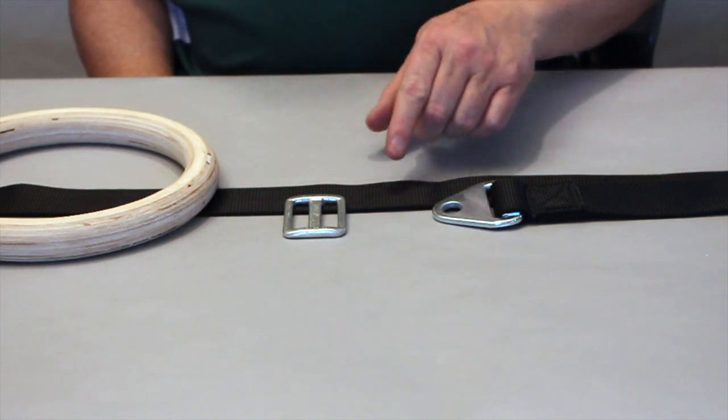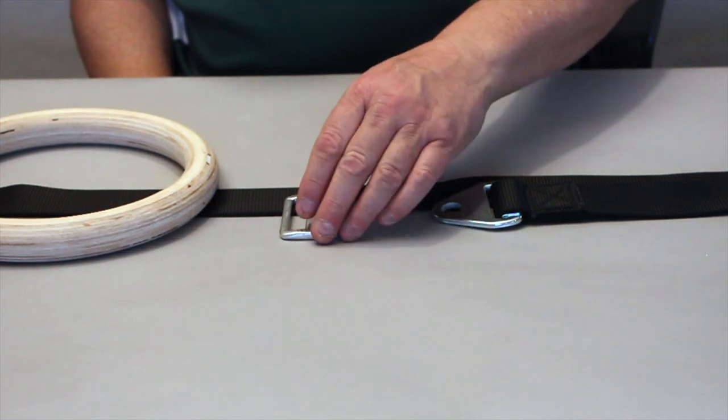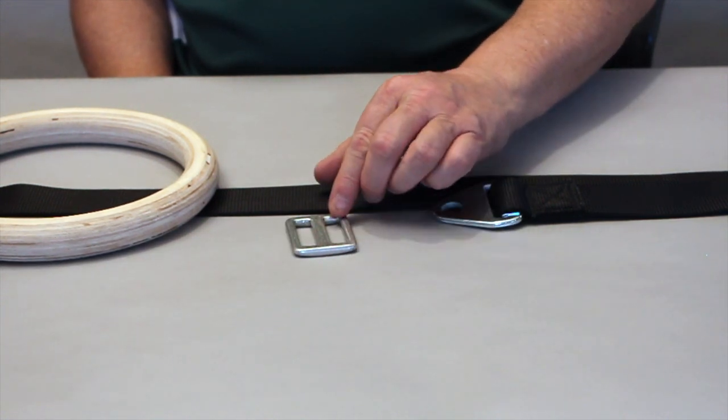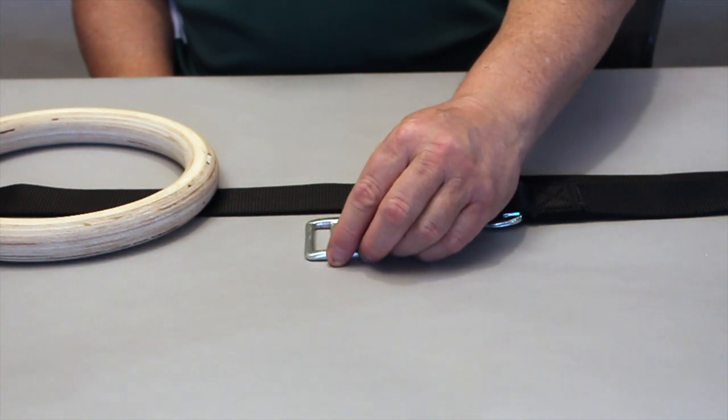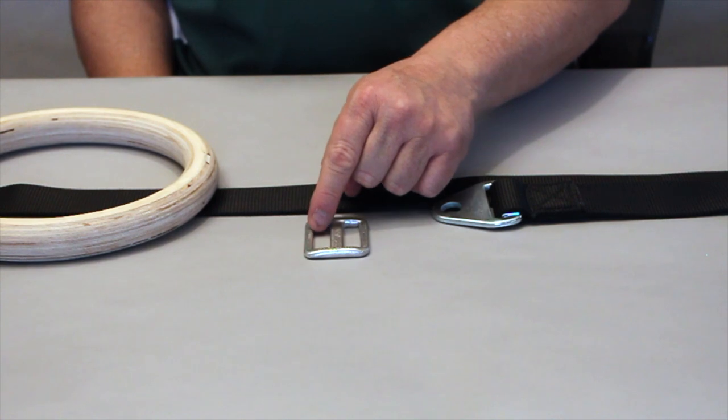This is how you connect the ring strap to the self-locking sliding buckle. The bottom of the buckle is completely flat. The top of the buckle has a slightly recessed bridge here where the strap will slide over.